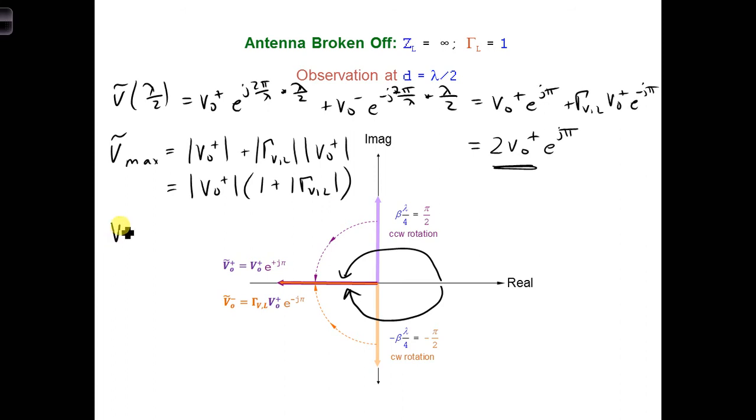And then also, the voltage minimum would be equal to whenever the phasors are anti-parallel. So we would subtract the 2. So we get v naught plus, and we would have 1 minus the voltage reflection coefficient at the load.